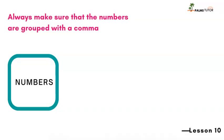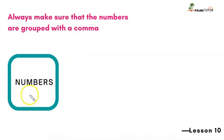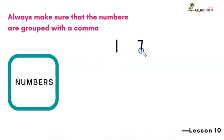Always make sure that the numbers are grouped with a comma after each three digits. Make sure that they are grouped with a comma. So let's see some numbers. Here is example one — I'll write it out: 174.